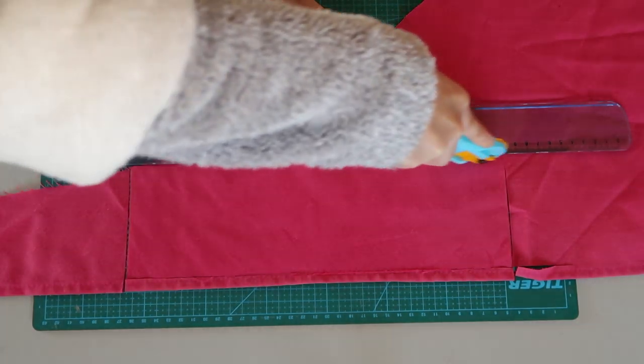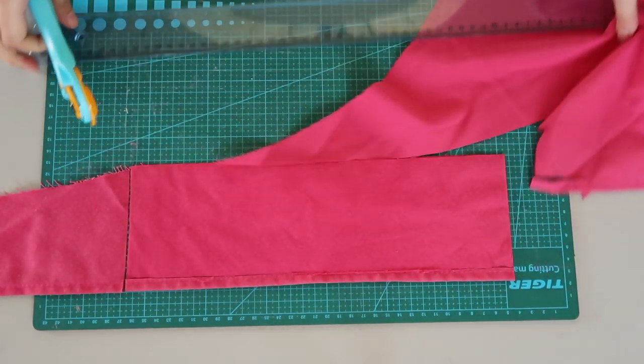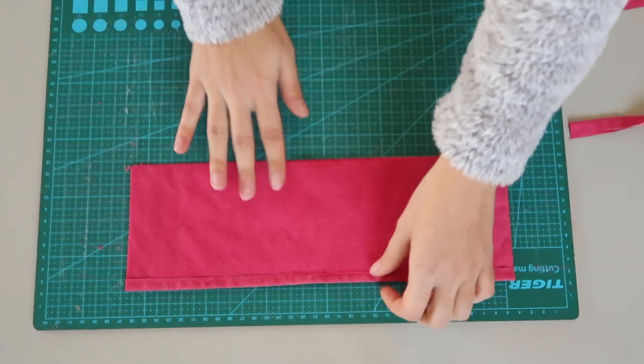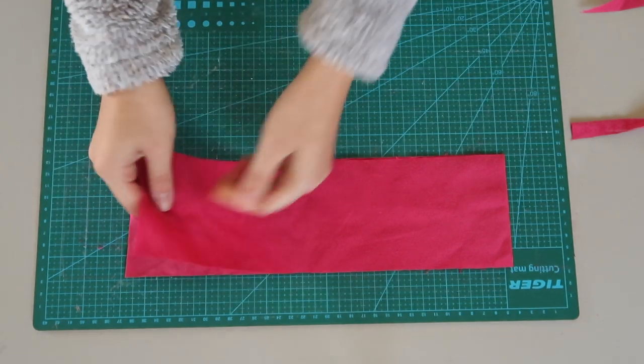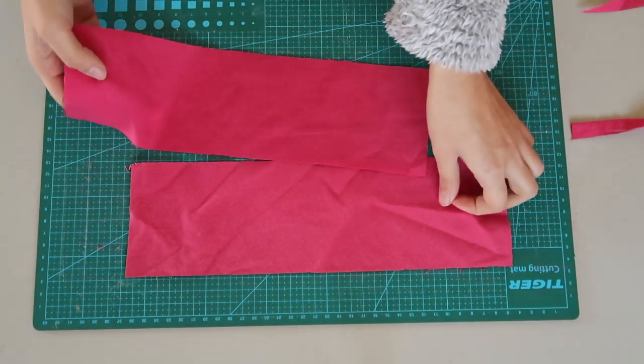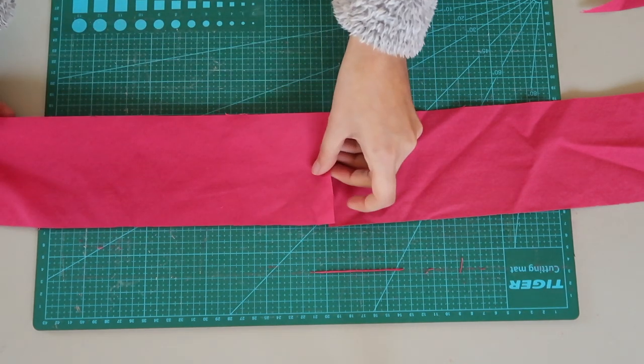If you can, cut another long strip that is 9 by 65 cm. I say can't because since I'm using scraps I didn't have enough for an entire piece, so I ended up cutting two pieces with about 32 cm and sew them together.